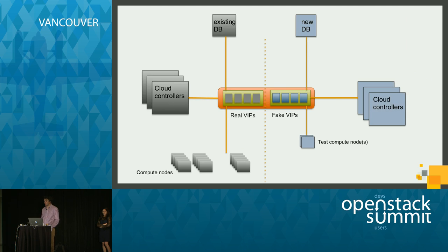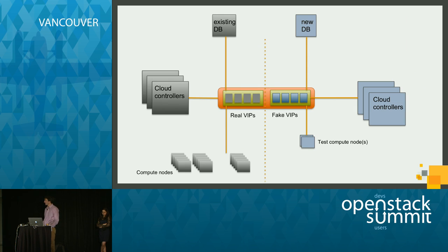The next step was to actually install and deploy OpenStack on the cloud controllers, and also upgrade Nova on the test compute node. That was a fairly easy task. Once everything was running, we started testing — we ran tests to make sure everything worked. Everything up until this point can be done as many times as you want, for one hour or one week, however long you need, with no impact on your running production environment.